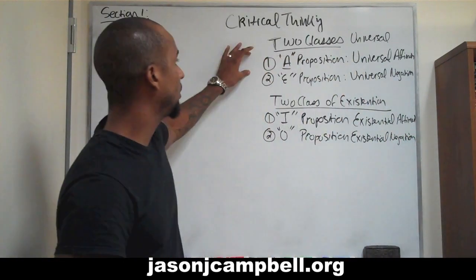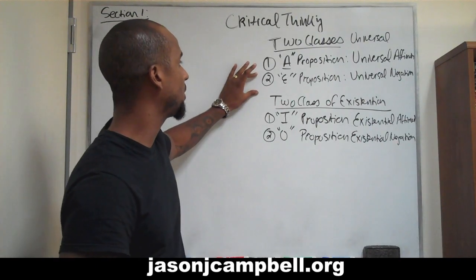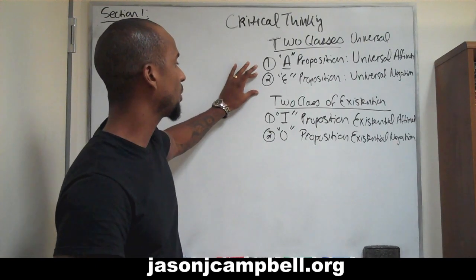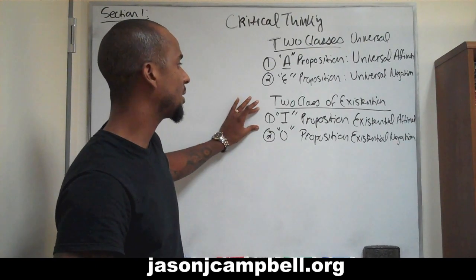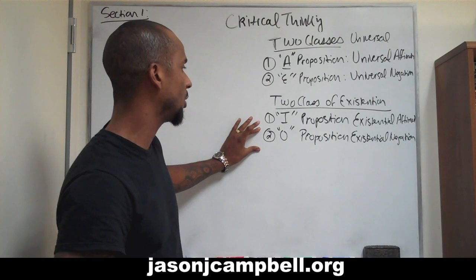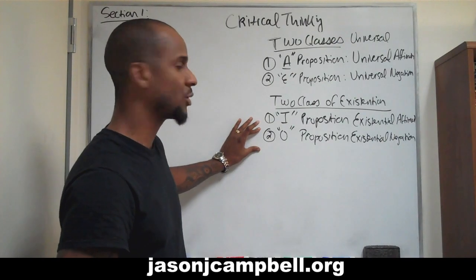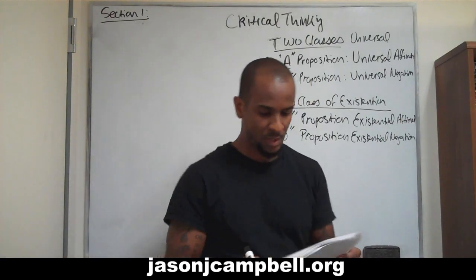So to recap: A proposition — universal affirmation. E proposition — universal negation. I proposition — existential affirmation. O proposition — existential negation. Just commit it to memory.